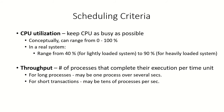The scheduler selects one of the processes from the ready queue and allocates the CPU to it. So which algorithm or scheduling criteria should the scheduler use so that the system performance is the best? It can take care of multiple things while deciding on the scheduling criteria.